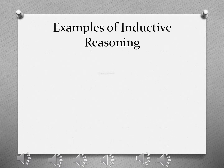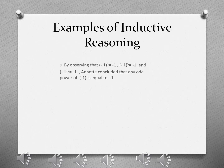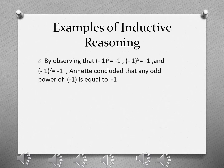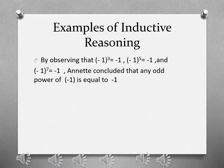For example, by observing that negative 1 to the power of 3 is equal to negative 1, negative 1 to the power of 5 is equal to negative 1, and negative 1 to the power of 7 is equal to negative 1, Annette concluded that any odd power of negative 1 is equal to negative 1. This argument uses inductive reasoning since the conclusion is based on observation of a pattern.